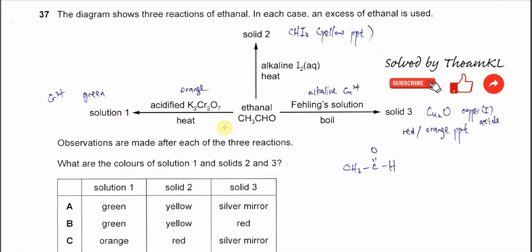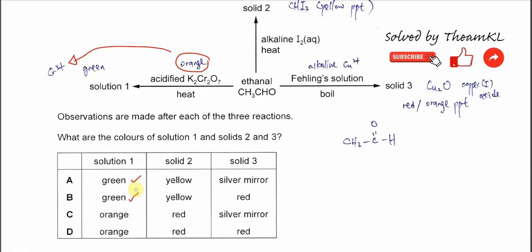Let's start from solution 1. Ethanal reacts with the acidified potassium dichromate. Ethanal is an aldehyde, it can be oxidized by the potassium dichromate. So initially, this potassium dichromate is orange color because the chromium is in a positive oxidation state. Once the potassium dichromate oxidizes ethanal, it will reduce to chromium 3. Chromium 3 is green color. So the solution 1 after reaction will be green, which means it's either A or B now.